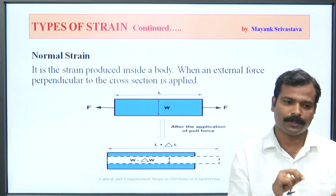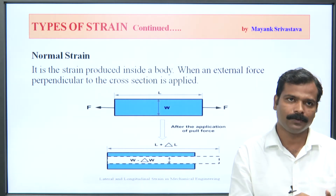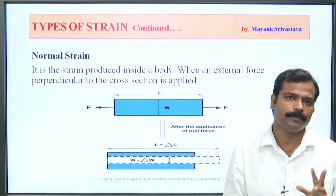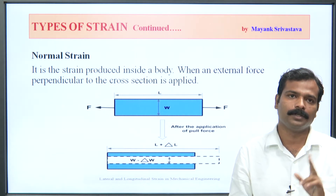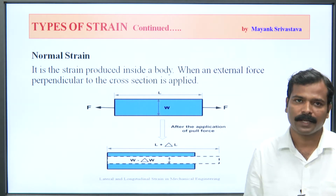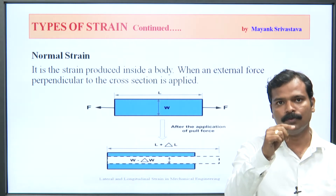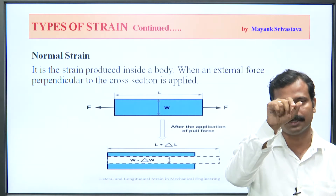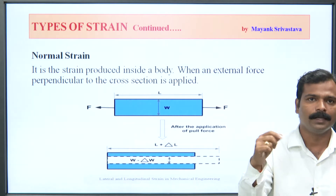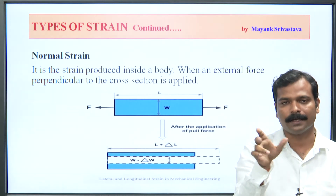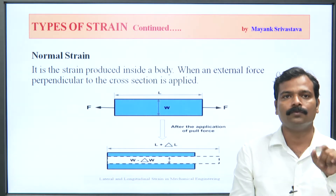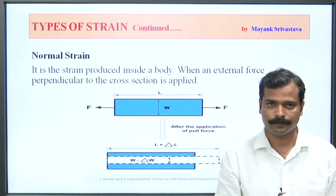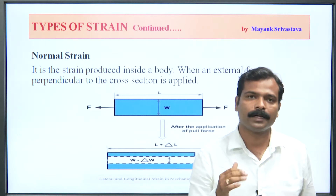So two types of deformations exist: lateral and longitudinal. Three types of strain are normal, shear strain, and volumetric. Normal strain has two parts: lateral and longitudinal. If we talk about width, width becomes W minus delta W — width decreases by delta W. And for length, since the length increased by delta L, the total length after elongation becomes L plus delta L. If width decreased, it becomes W minus delta W. This is the normal strain.